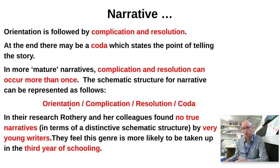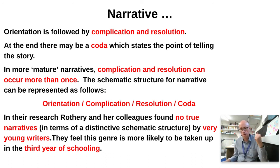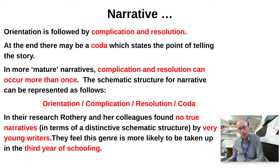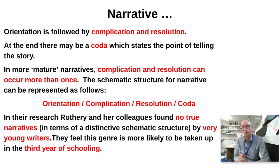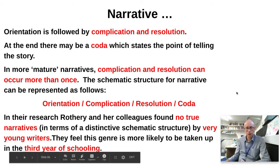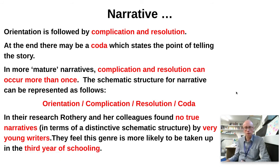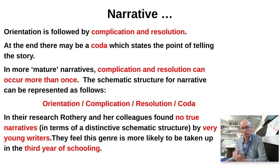The schematic structure would look something like: orientation, complication, resolution, and perhaps a coda. It's interesting, because children are exposed to narrative structures from a very young age — sitting on the parents' knees looking at story books. So you would have thought it was perhaps the one genre that children will be able to master very quickly. But in their research, Rothery and her colleagues found that there were no true narratives — in terms of what we talked about there — by very young writers, by which I mean kind of five, six, seven year olds. And they felt that narrative writing is more likely to be taken up with any level of success in the third year of schooling, by sort of seven or eight year olds.